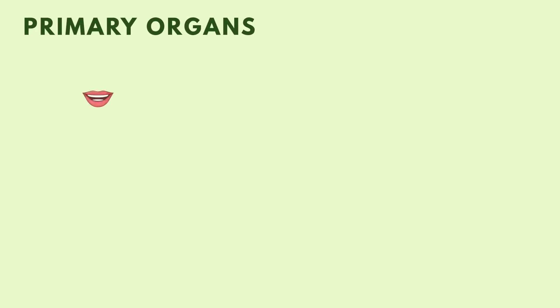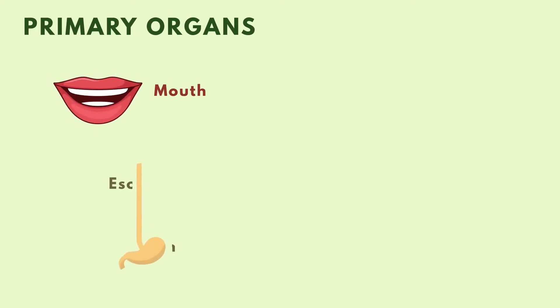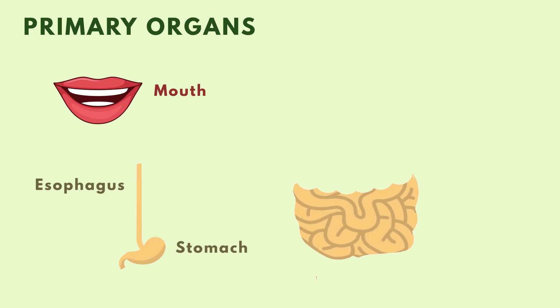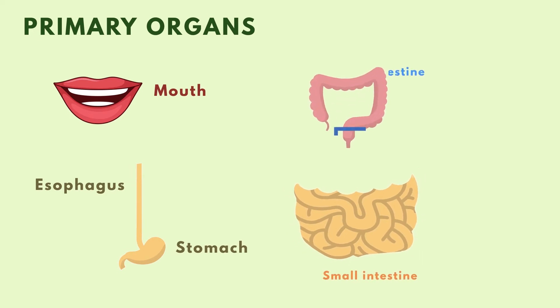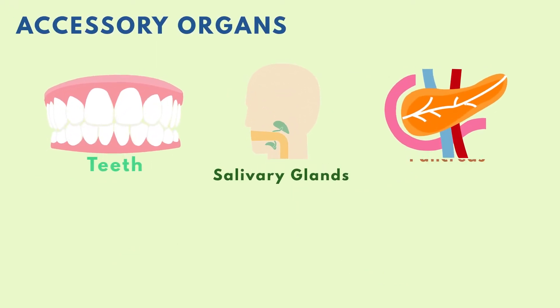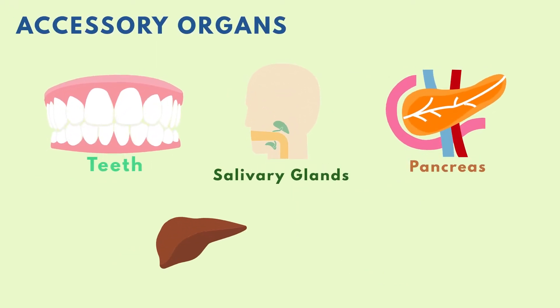The primary organs of the GI tract are the mouth, esophagus, stomach, small intestine, large intestine or colon, and rectum and anus. The accessory organs include the teeth, salivary glands, pancreas, and liver.